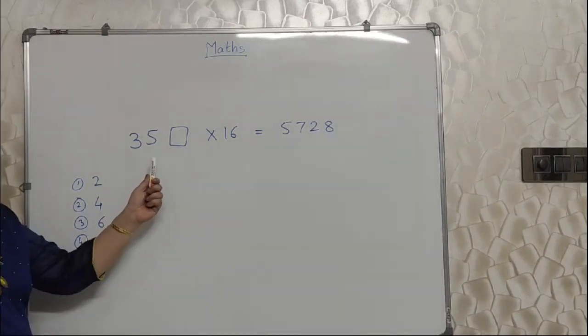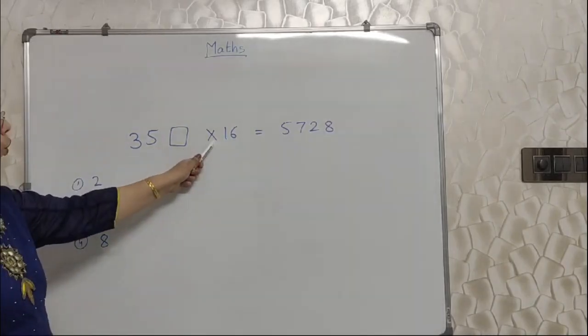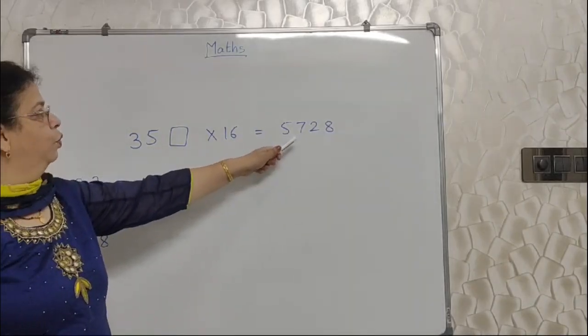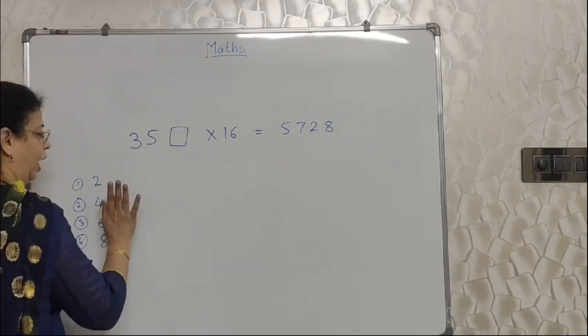See students, I have written the next sum on the board. 35 box into 16 is equal to 5728. Now these are the options. So here in this kinds of sum, you have to take help of options.